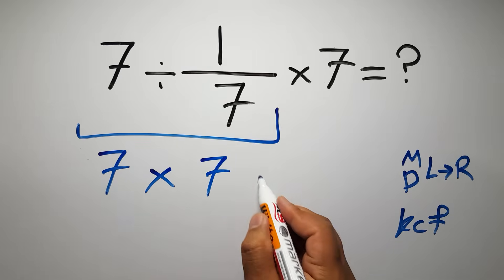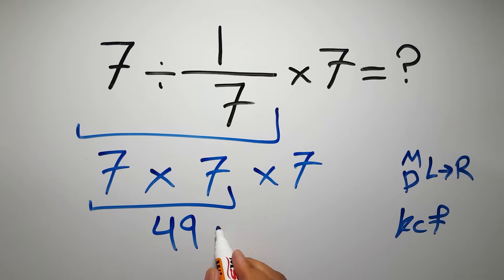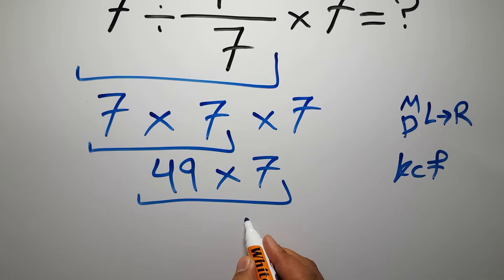And again, here we have times 7. So 7 times 7 gives us 49, and 49 times 7, which equals... 7 times 9 gives us 63. We write 3 here, and carry 6 here.